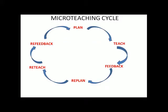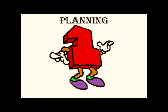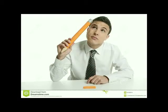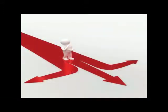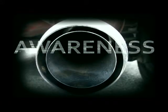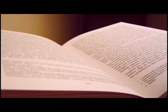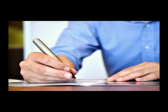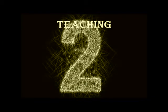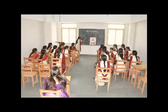It is a cyclic process. The first stage is planning. Here the trainee involves selection of the skill to be practiced, awareness of the components of the skill, selection of a suitable concept, and writes the micro teaching plan. The second stage is teaching, where the teacher trainee teaches the lesson in a micro teaching setting.